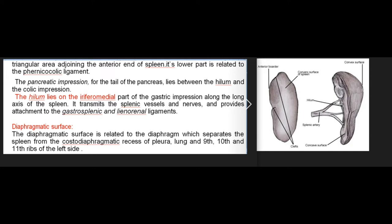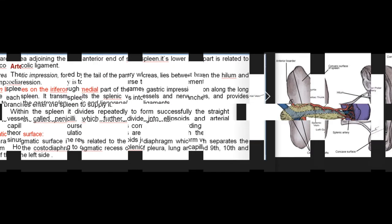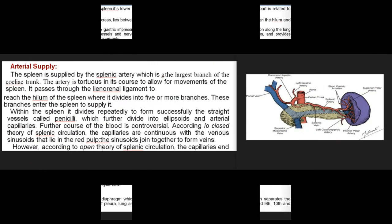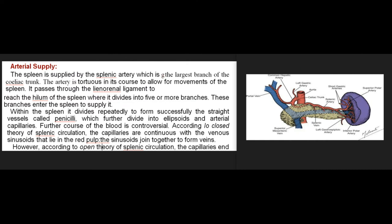The hilum lies on the inferomedial part of the gastric impression along the long axis of the spleen. It transmits the splenic vessels and nerves and provides attachment to the gastrosplenic and lienorenal ligaments. The diaphragmatic surface is related to the diaphragm, which separates the spleen from the costodiaphragmatic recess of the pleura, the lung, and the 9th, 10th, and 11th ribs on the left side.